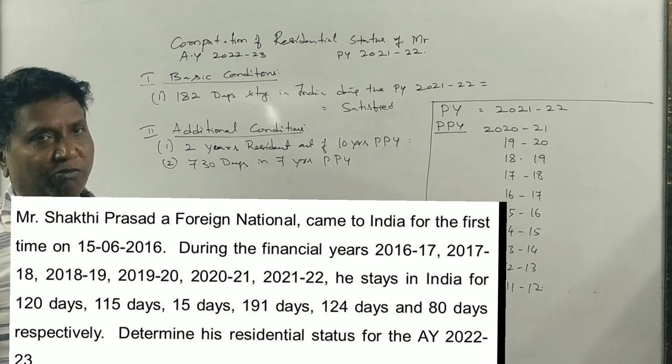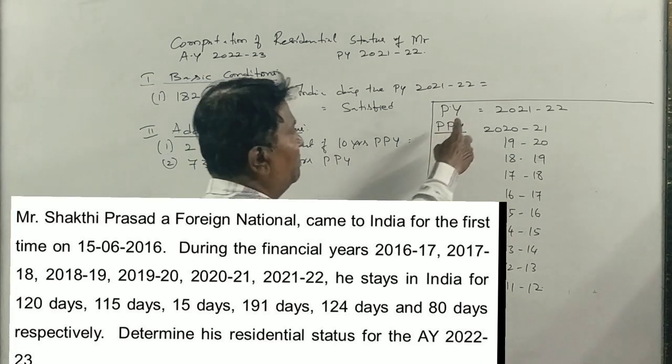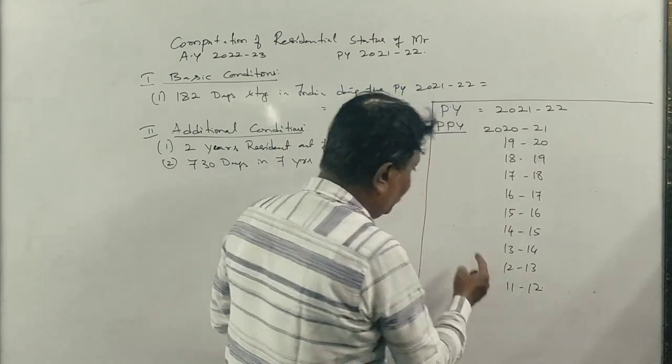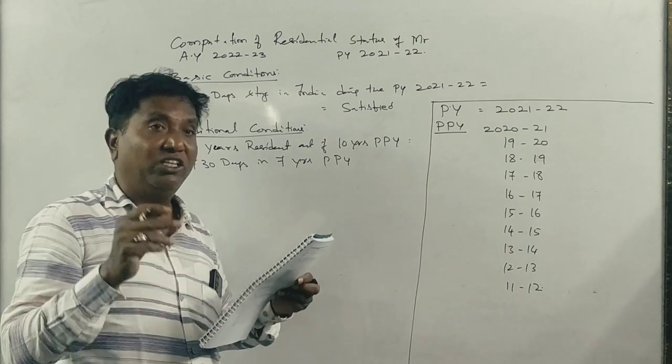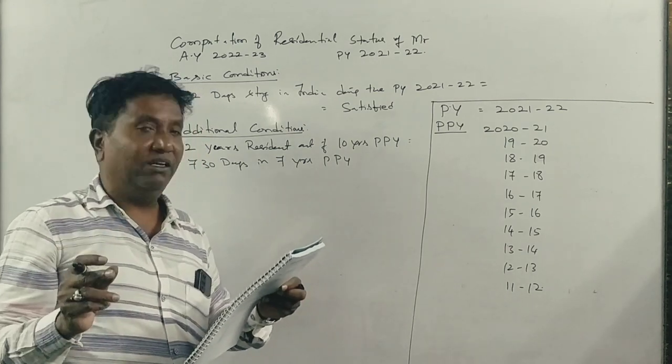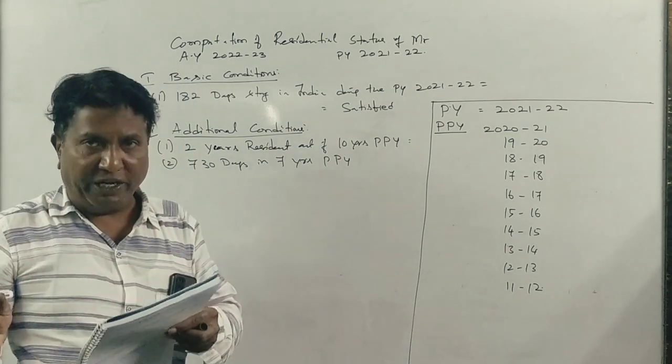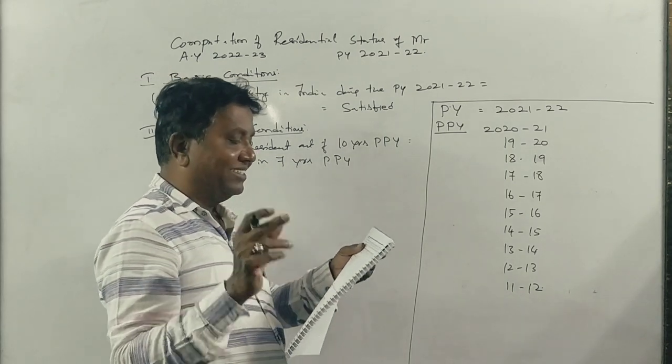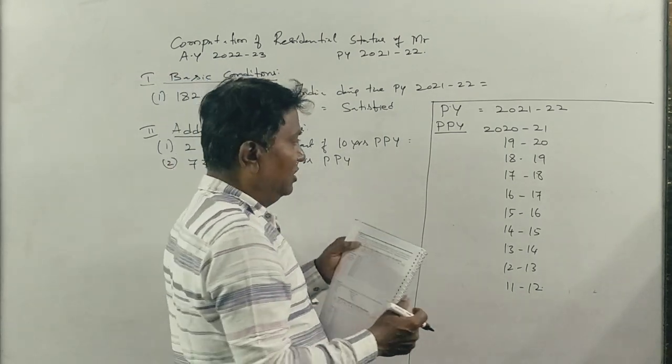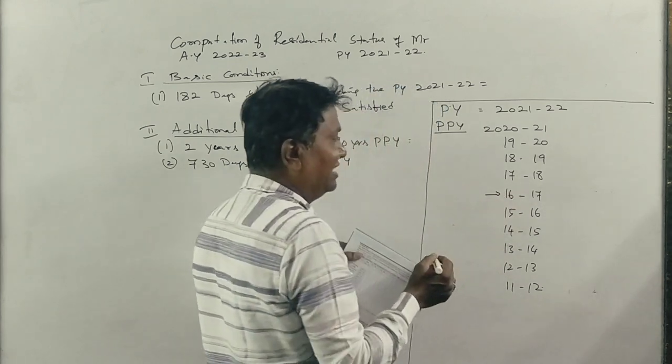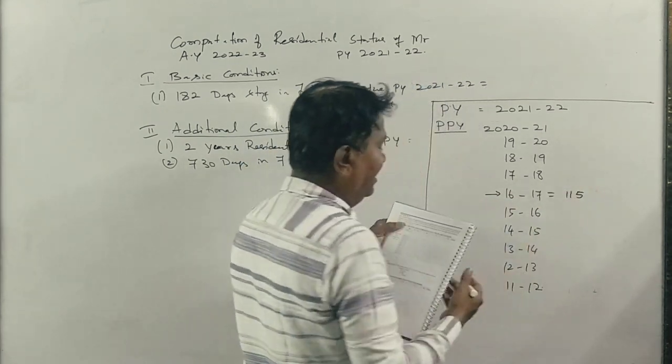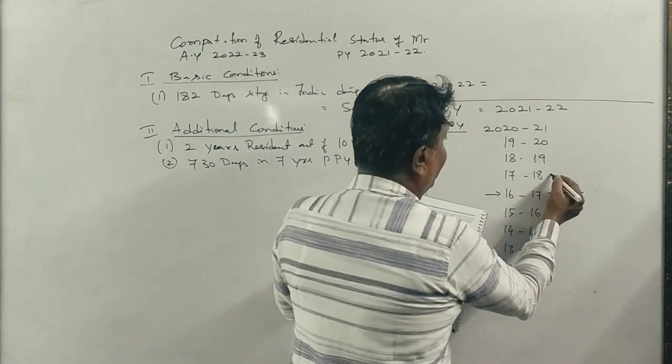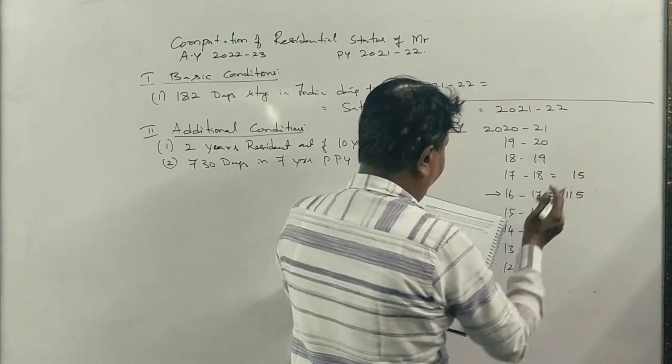Now, what is the maximum problem? We will be able to check the previous year of India. 15th of June 2016, first time he came to India, during the year 2016-17, he was there for 115 days, and 17-18, he was there for 15 days.